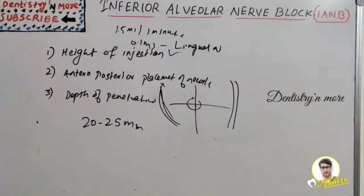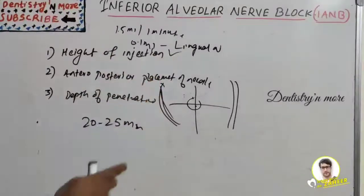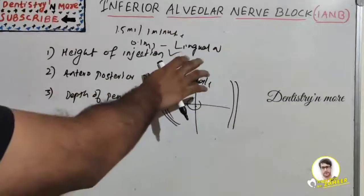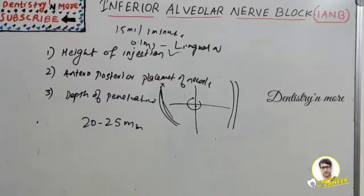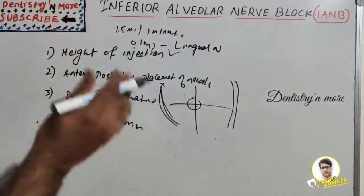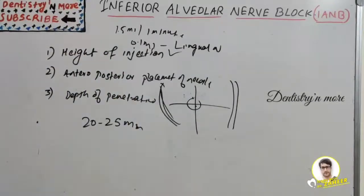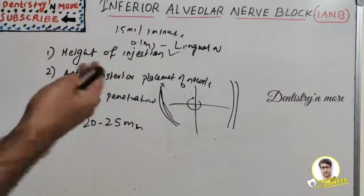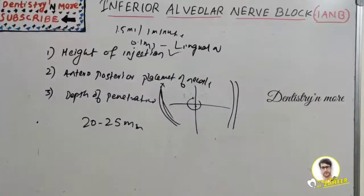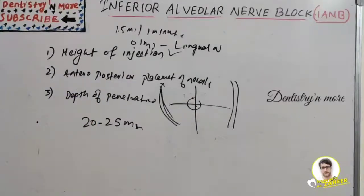After approximately 20 seconds, return the patient to upright or semi-upright position and wait three to five minutes before commencing the dental procedure. Along with IANB, a long buccal nerve block is also given if a soft tissue procedure is indicated in that area — the needle is brought to the same quadrant to administer long buccal nerve anesthesia.